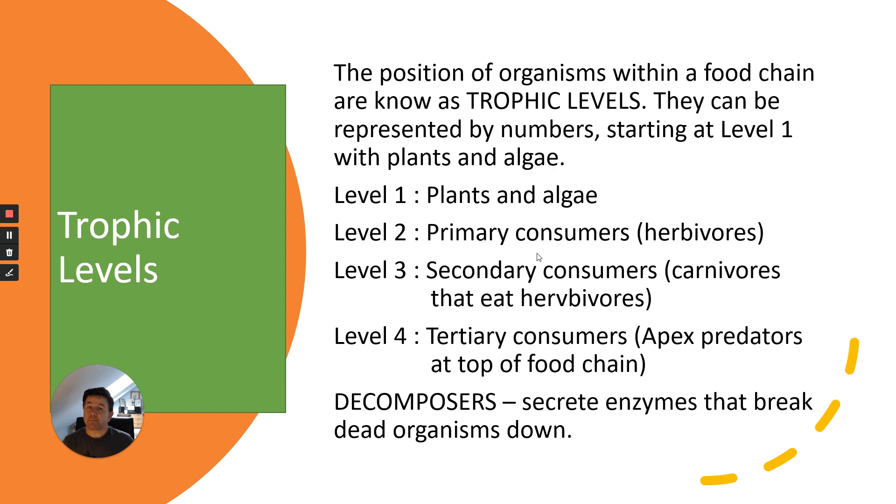Level two is primary consumers, which are herbivores. Level three is secondary consumers, which are carnivores that eat herbivores. Level four is usually tertiary consumers or apex predators at the top of the food chain. You also have decomposers, which secrete enzymes to break organisms down.